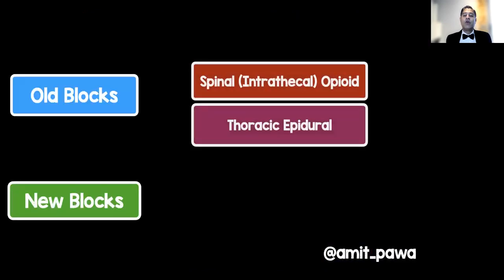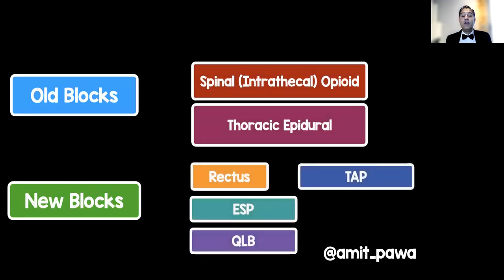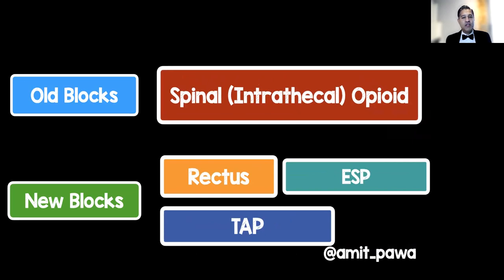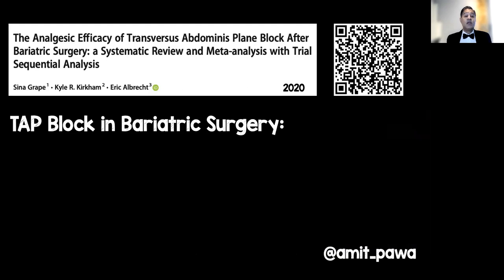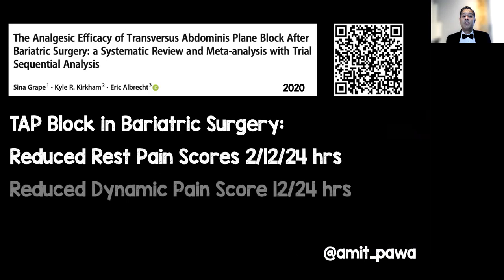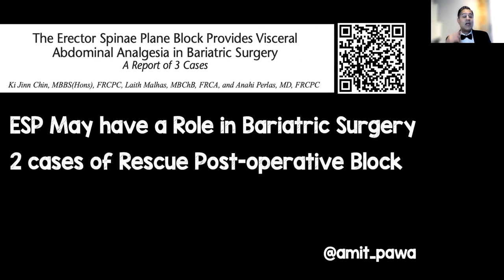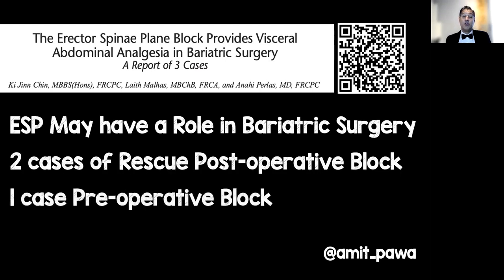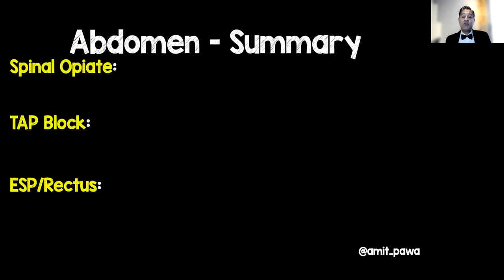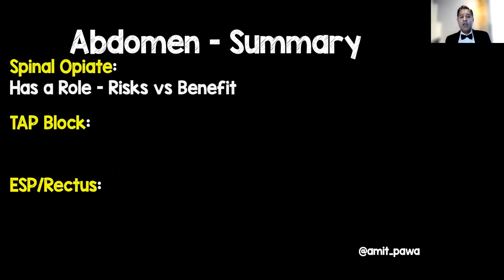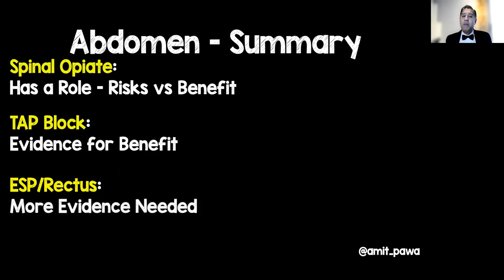For trunk and abdomen: the classic thoracic epidural, spinal with intrathecal opioids, and the newer fascial plane blocks — rectus sheath, TAP, ESP, and QLB. Spinal opioid is very difficult to get away from and can be very beneficial. A systematic review and meta-analysis by Grappa and colleagues showed that TAP block in bariatric surgery made a significant difference. A 2017 paper by Kijin showed the erector spinae plane block may have a role in bariatric surgery — used as a rescue block and pre-operatively with beneficial effect. There is also a potential role for ESP and rectus sheath blocks, though the evidence base is still developing.